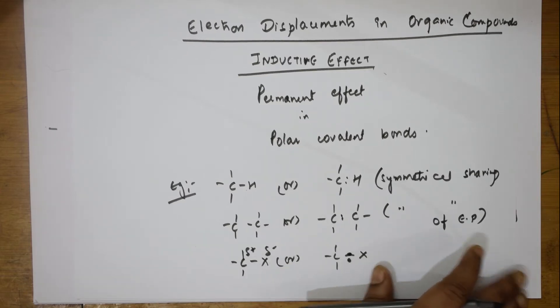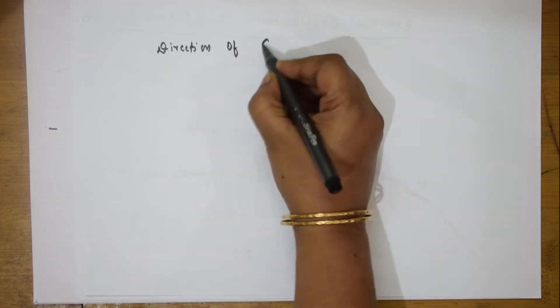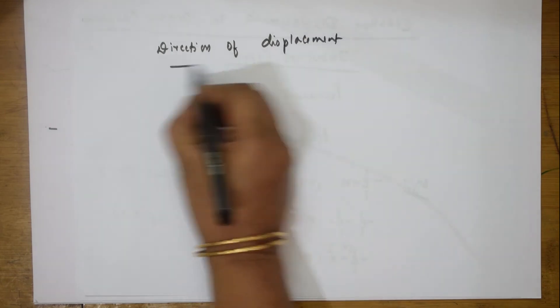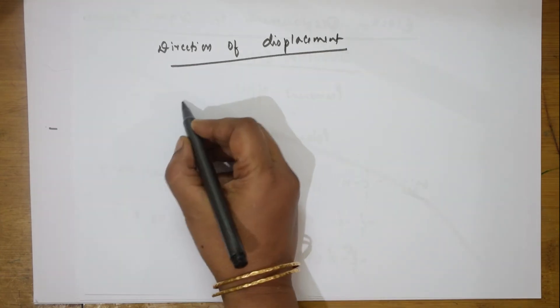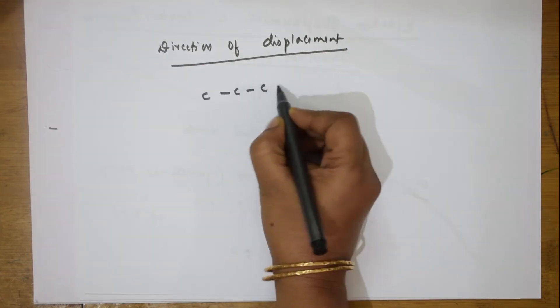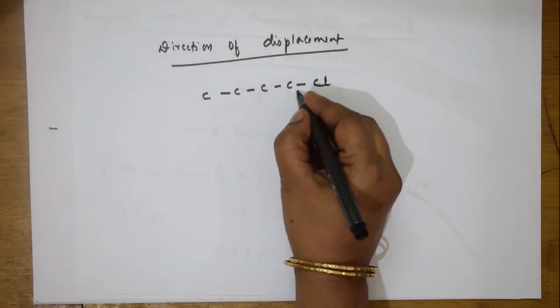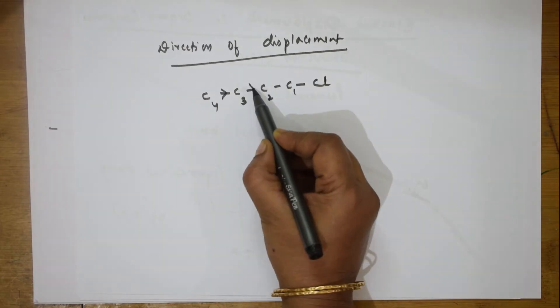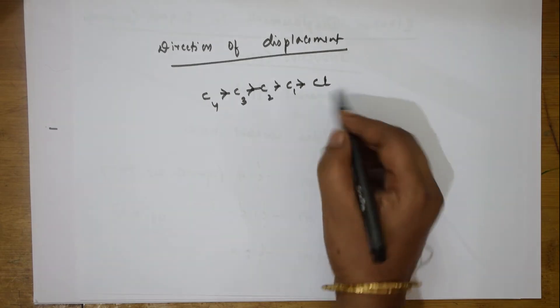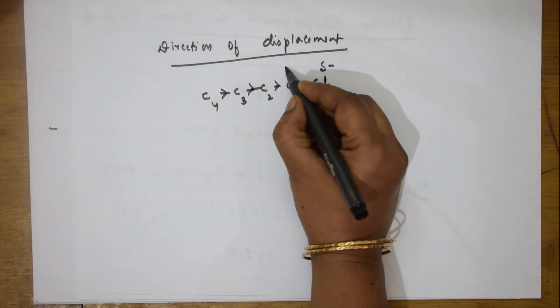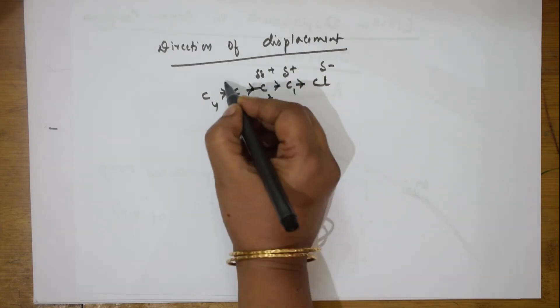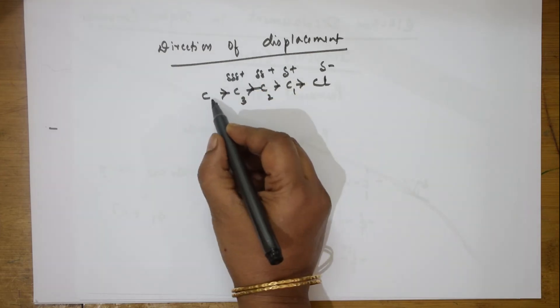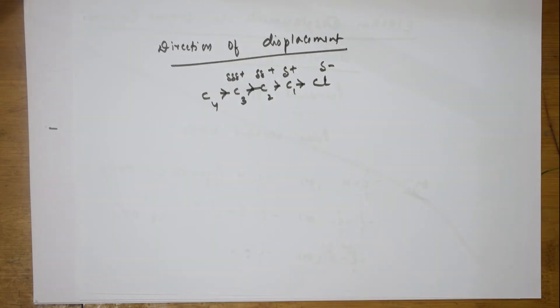The direction of displacement of electron density is shown by an arrowhead pointing toward the electronegative atom. For example, in a chain C1-C2-C3-C4-Cl, the electron density is dragged toward chlorine. C1 becomes electron deficient and acquires a partial positive charge, and this effect is transmitted along the chain in the direction of the arrowhead.